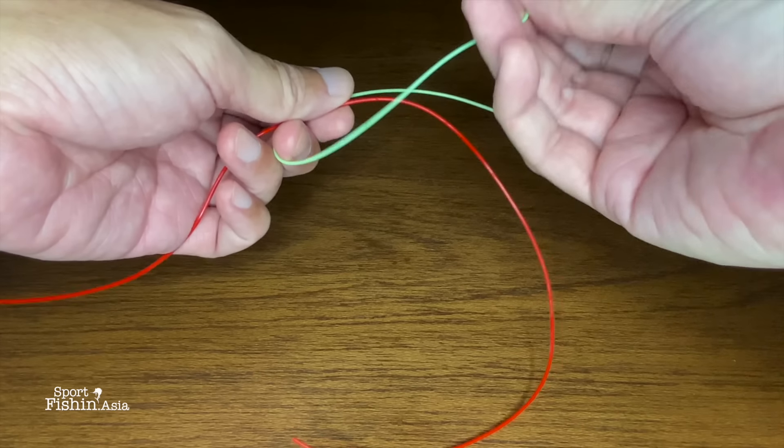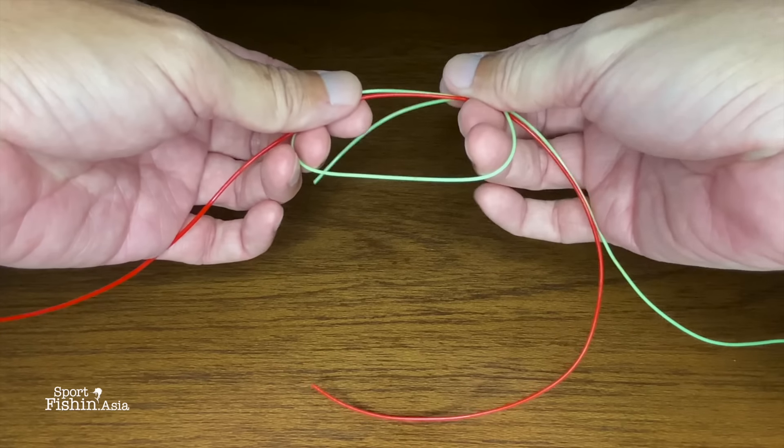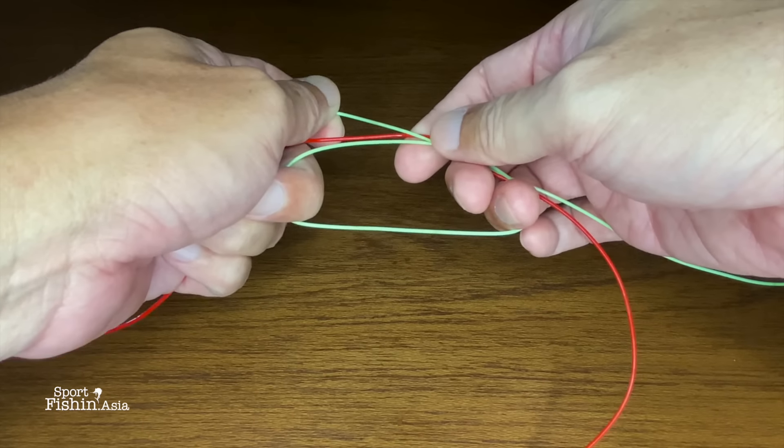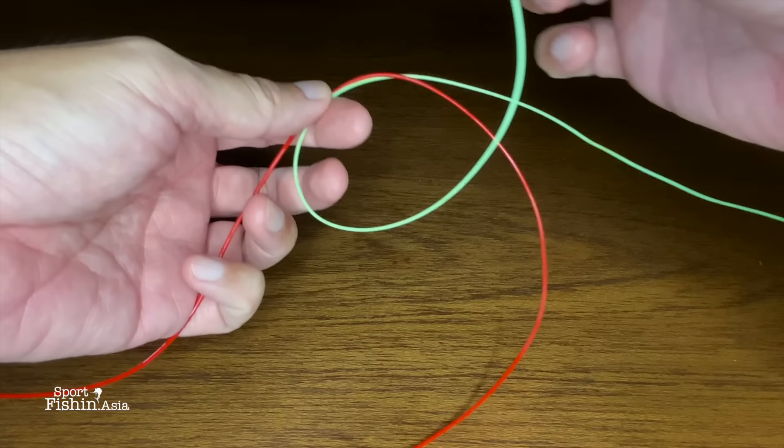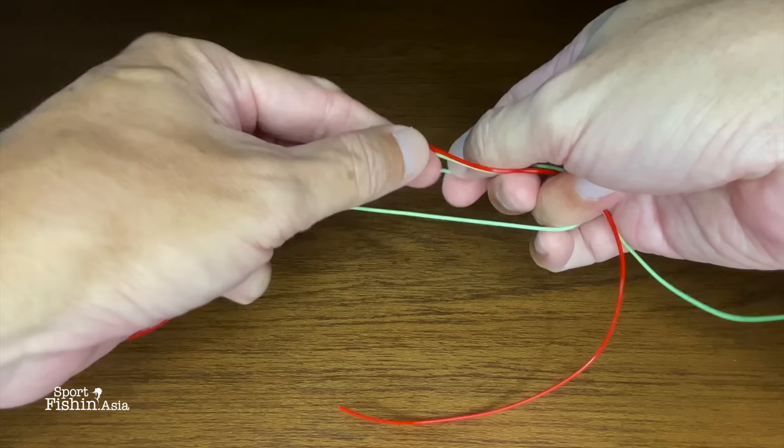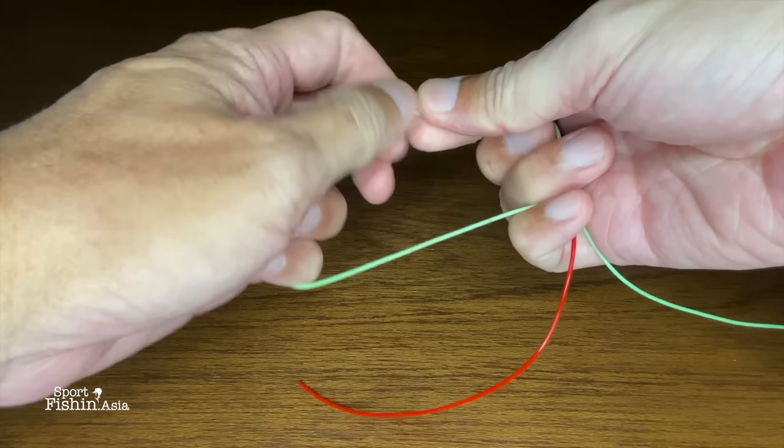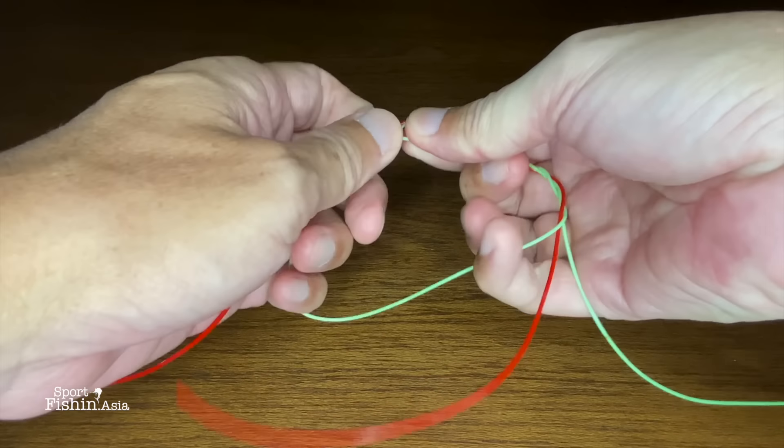Then you start from one end, make a loop, and wrap the tag end over and around both lines through the loop. In this case I'm going to make four wraps.